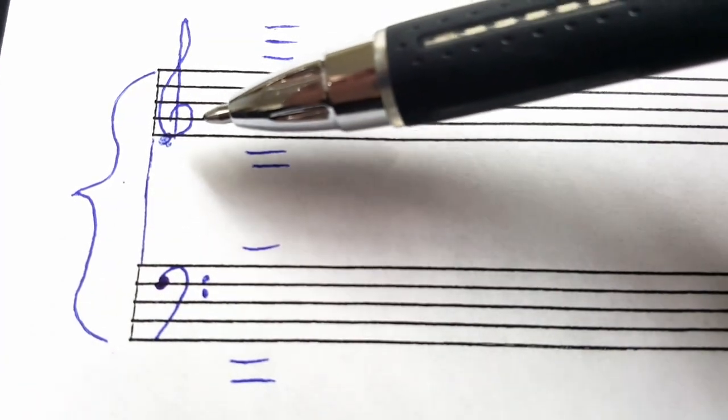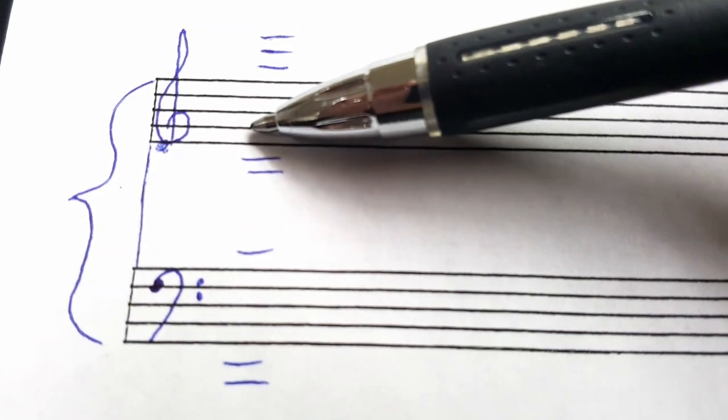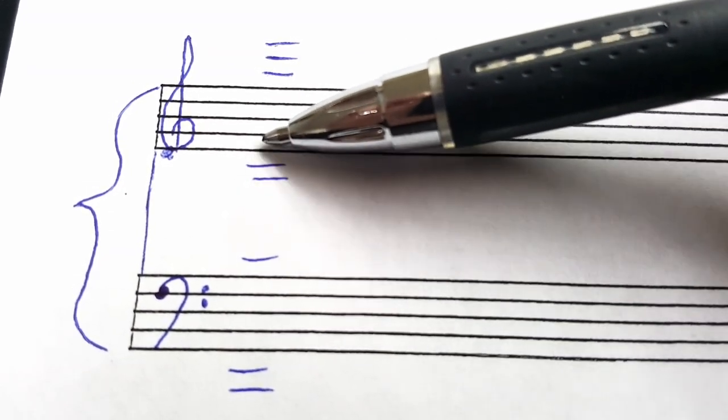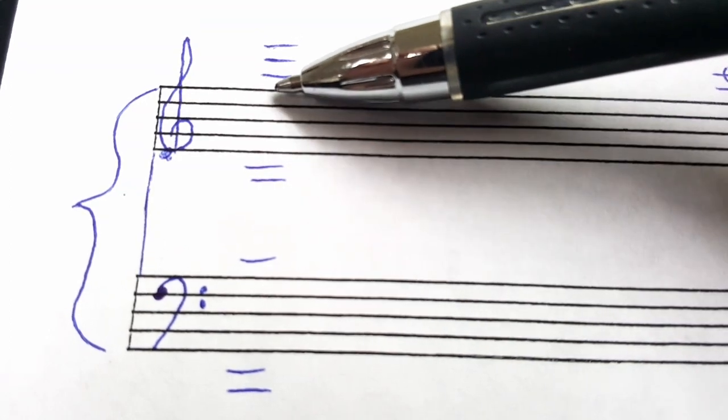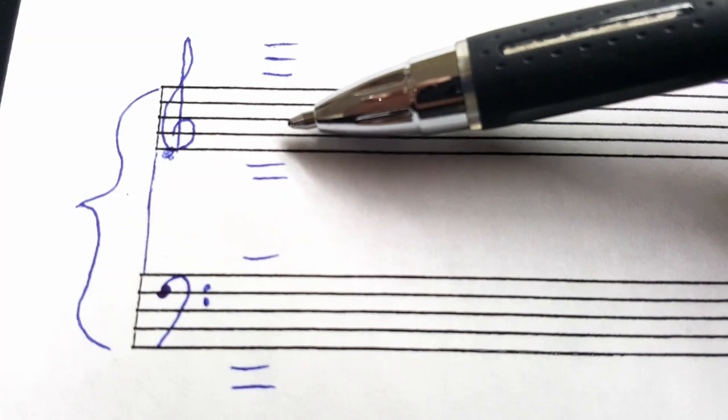Again, this is the treble clef, or the G clef, so the second line names G. And for our lines you have Every Good Boy Does Fine, and to review, the spaces are F-A-C-E.